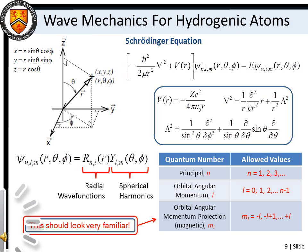The Schrödinger equation for the hydrogen atom resembles a three-dimensional version of the particle in a box Schrödinger equation. Since atoms are spherically symmetric, the Cartesian coordinate system is often replaced with spherical polar coordinates to make the math a little easier to deal with. We also describe the atom in terms of a single reduced mass for the electron-proton system, which is equal to the product of the electron and proton masses divided by their sum. The total wave function for the hydrogen atom can be thought of as a product of a radial function, which depends on the electron's distance from the nucleus, and the spherical harmonic, which depends only on the electron's polar and azimuthal angles.